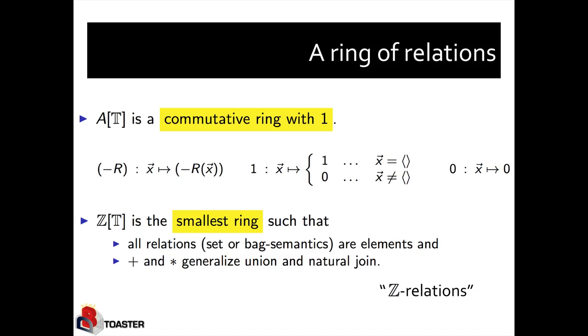Now, we have obtained a ring of generalized multiset relations. It's a commutative ring with 1. The 1 element, the neutral element of multiplication, is the GMR that maps the empty tuple to 1 and any other tuple to 0. The neutral element of addition, 0, maps any tuple to the multiplicity 0. In the case that our multiplicity domain is the integer set, we actually can prove that the ring we've obtained is the smallest ring that has the properties that all relations are elements and the operations plus and multiplication generalize union and natural join, which is actually what we wanted to obtain. So we can call this the ring of relations. It's actually stronger than just the smallest ring. We can actually show that, in a sense, this ring is unique and there is no other way of building such a ring that has the properties that union and natural join are generalized.